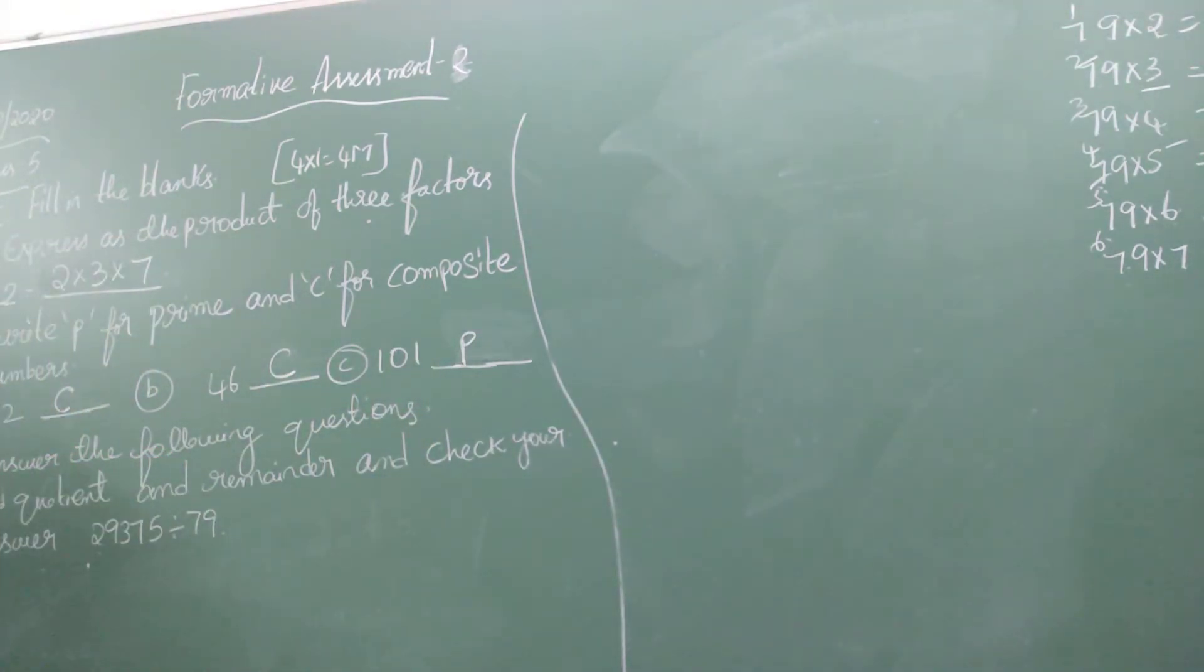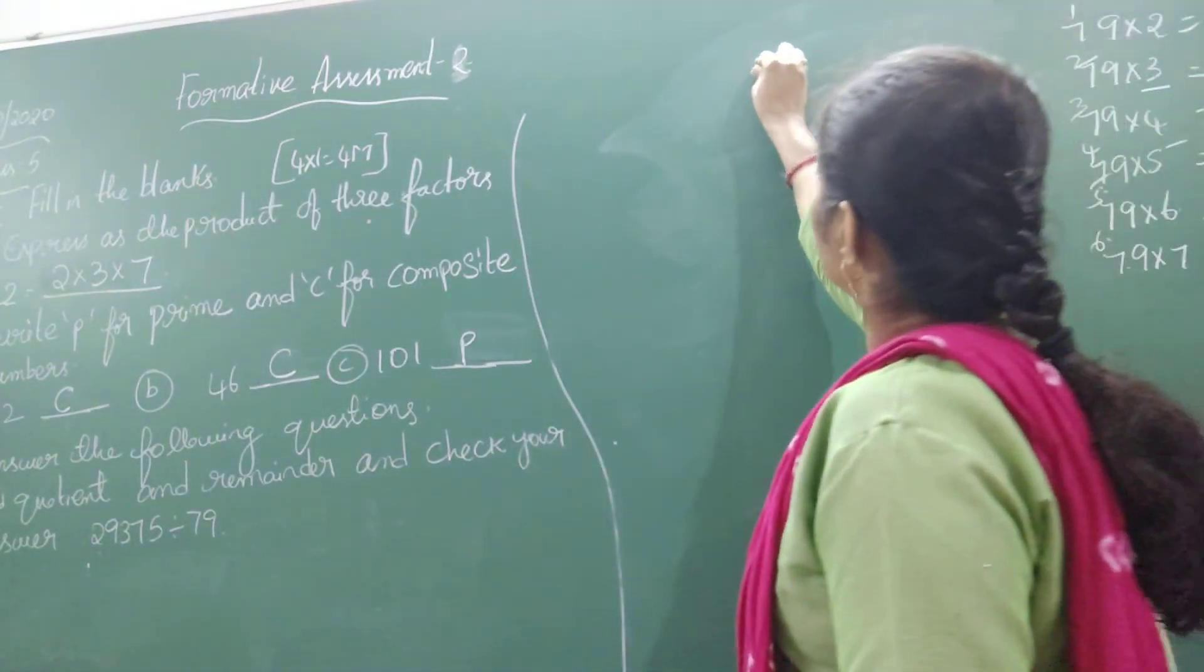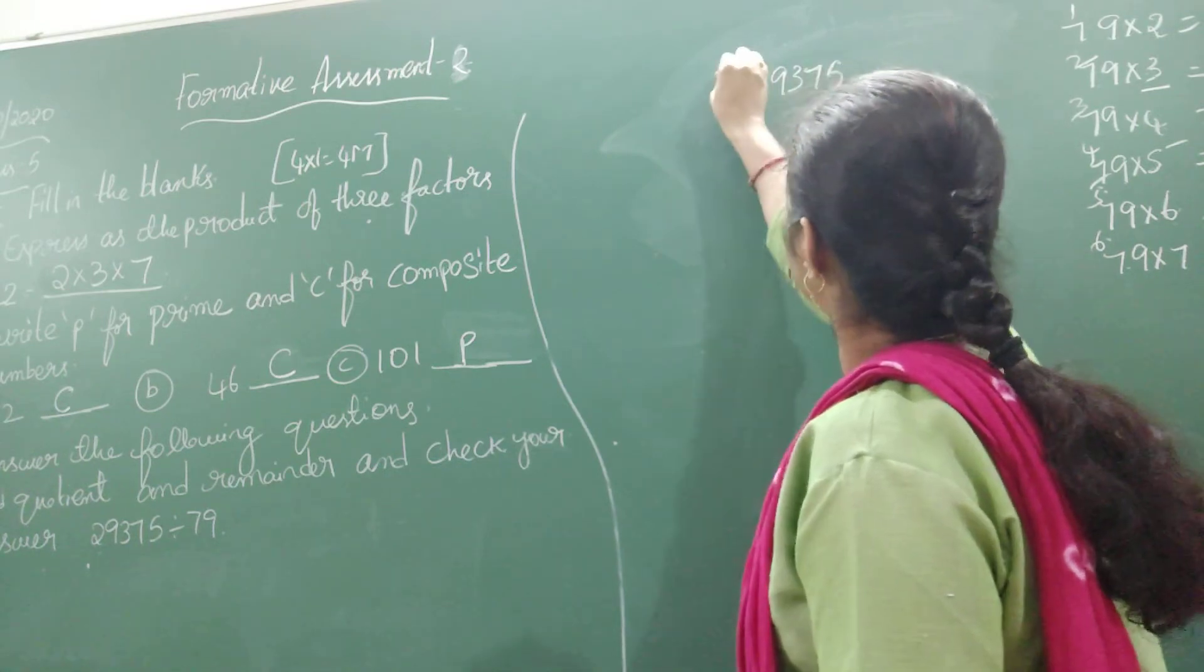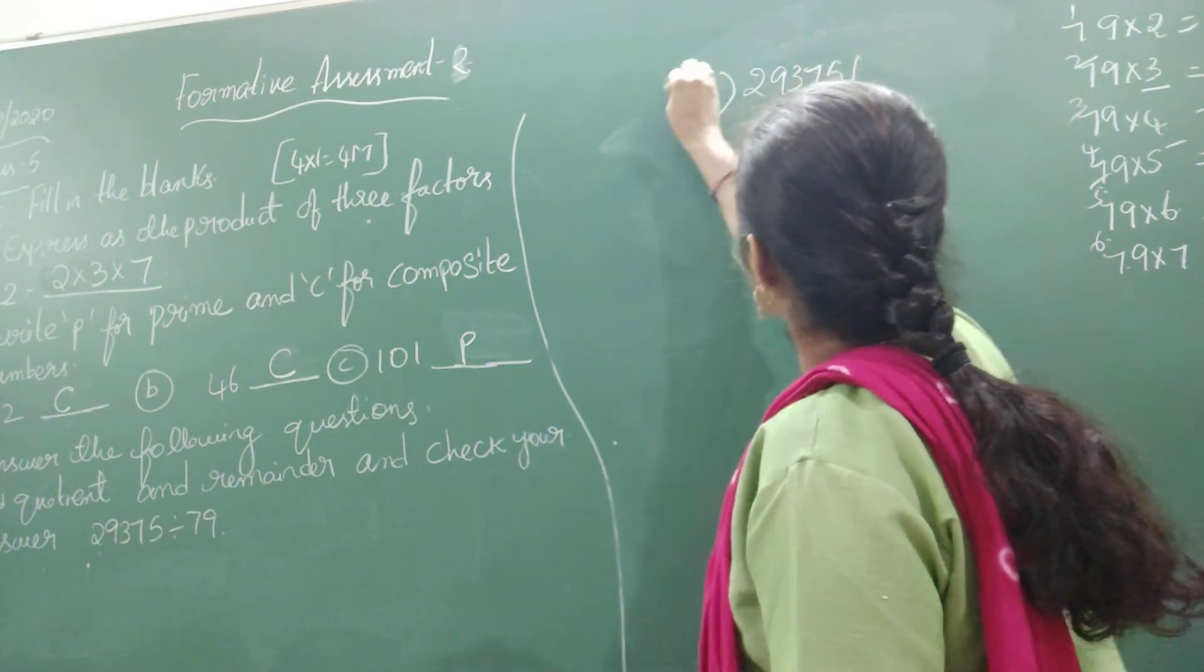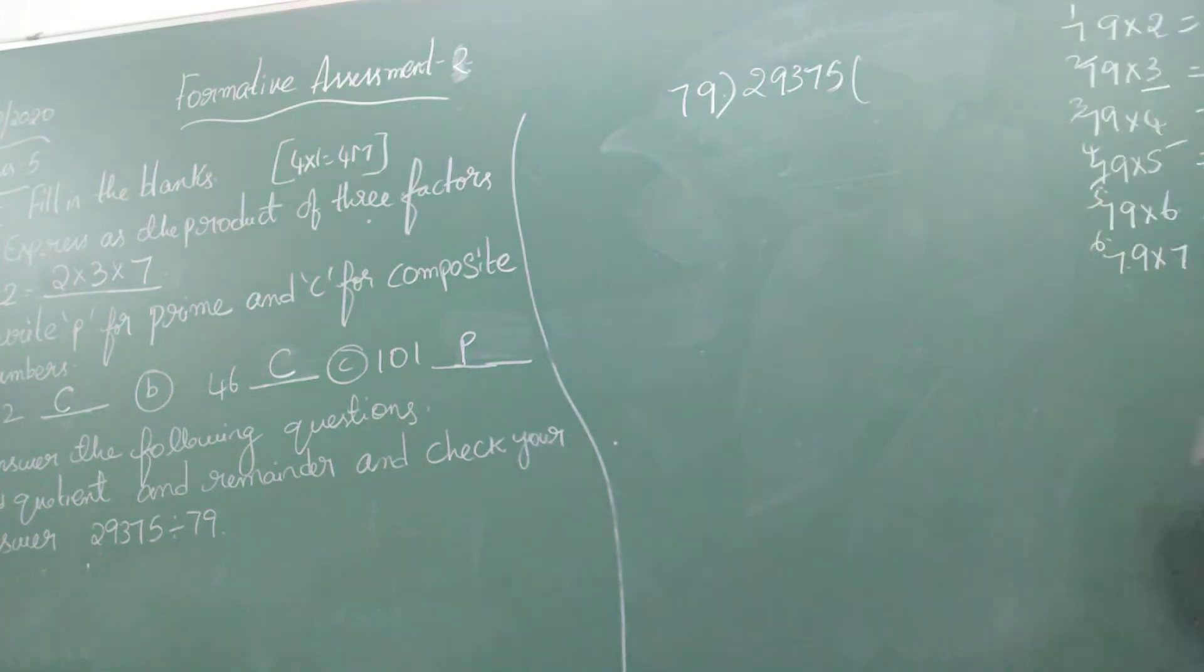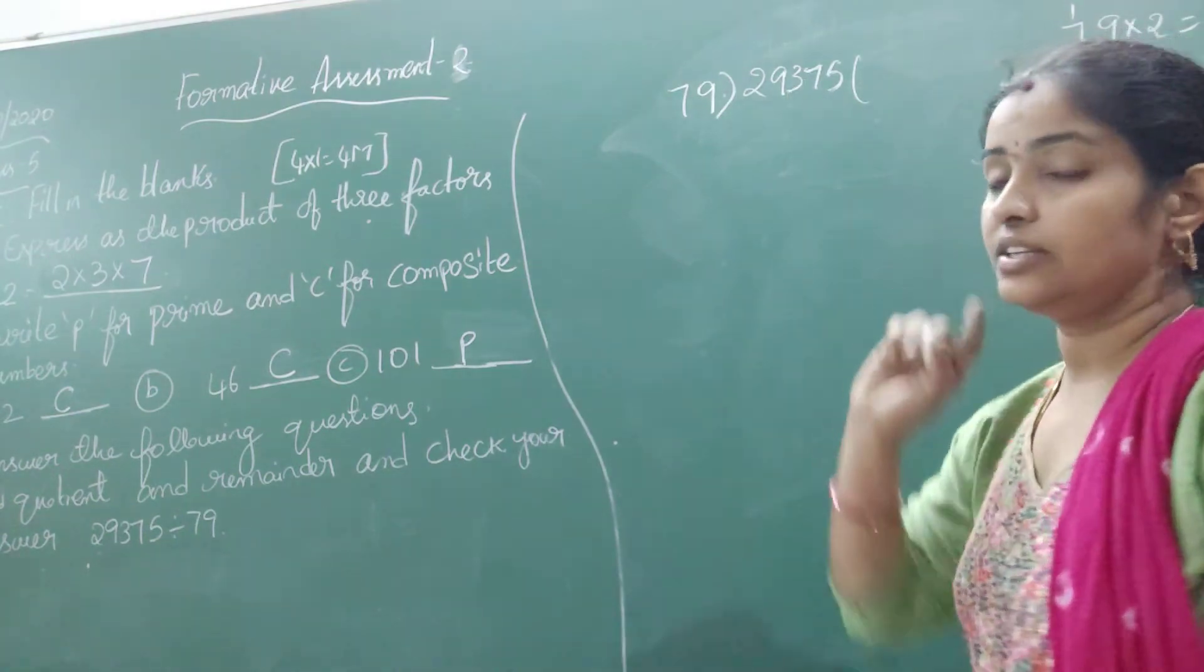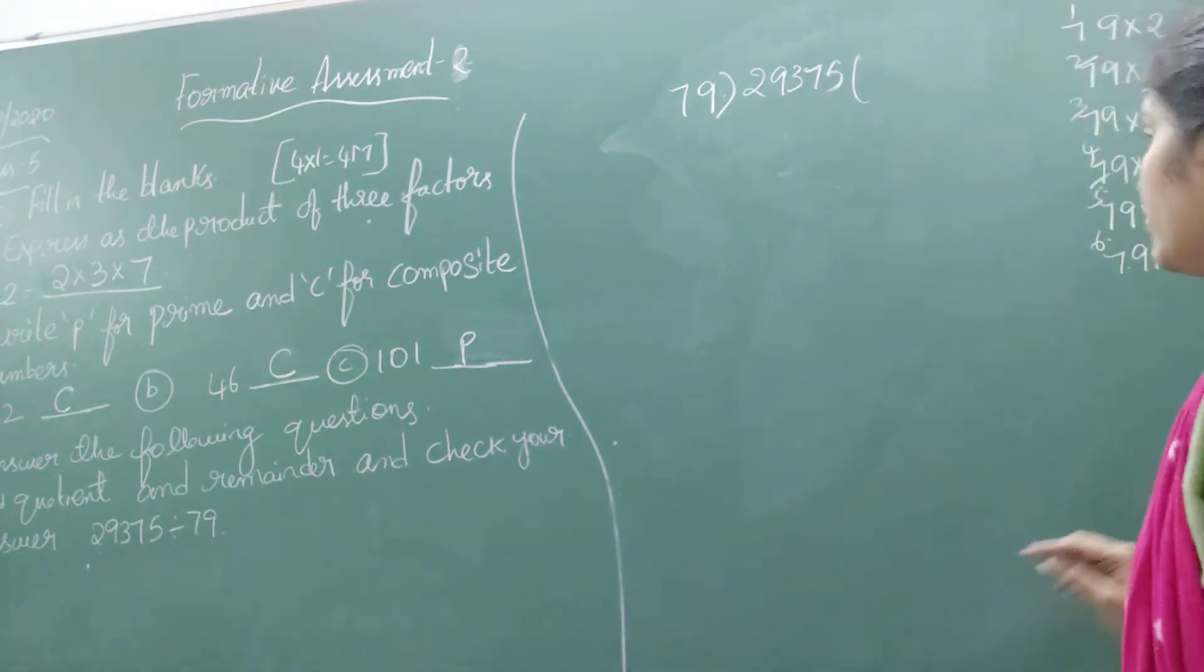Now coming to the next question. Find the quotient and remainder, and check your answer. Let us start dividing the given number, 29,375 divided by 79. So here are the multiples of 79. Now look at the first three digits, that is 293. 293 is not possible in 79, so I need to take less than that, 237.